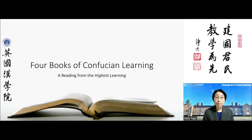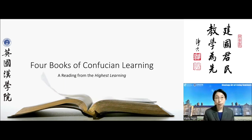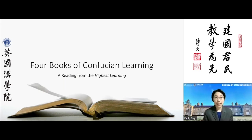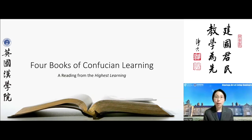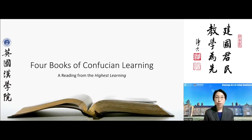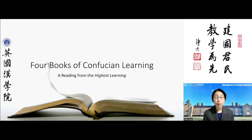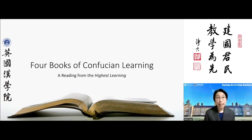The four books of Confucian learning is one of the five modules of the BA Sinology Humanistic Education. They are the four core texts that made up the curriculum for formal learning for scholars in the last 600 years of China's imperial history.